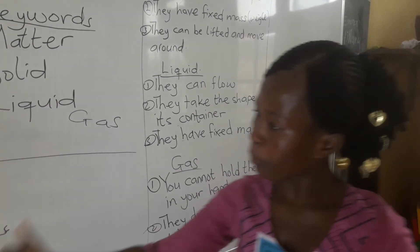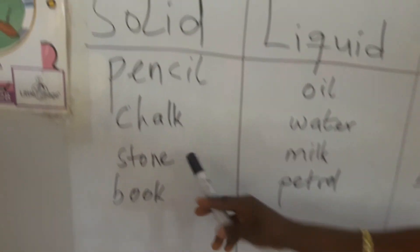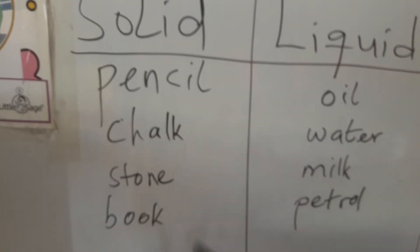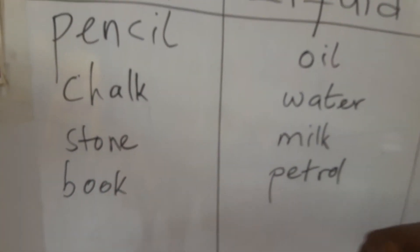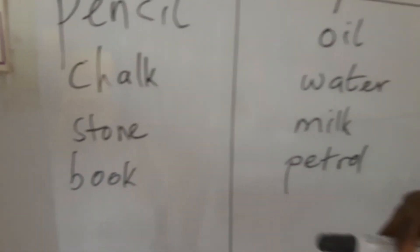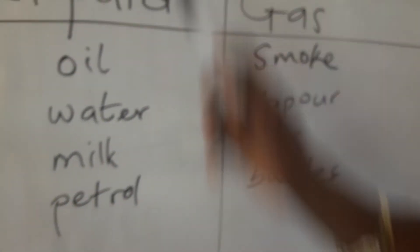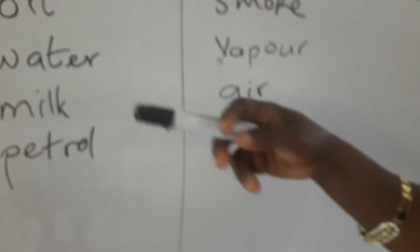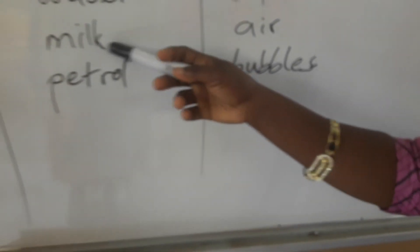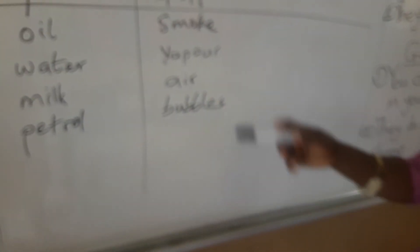Examples of solid: pencil, chalk, stone, book, chair, cupboard, etc. Examples of liquid: oil, water, milk, petrol, porridge, tea are all liquid.